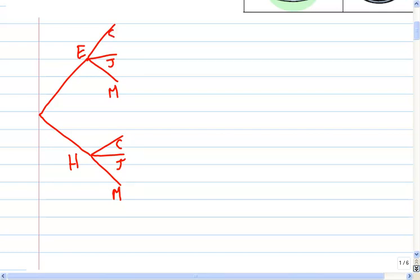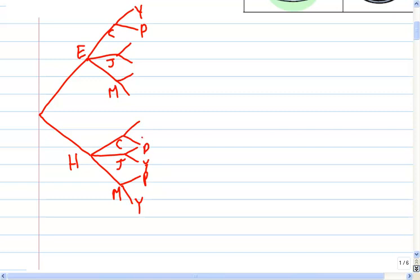Finally, I slide my tray to the very end and get to pick a dessert — nothing like yogurt for dessert. It's either yogurt or pie from each of these final decisions. So the dessert branches are: yogurt, pie, yogurt, pie, yogurt, pie, yogurt, pie. This tree diagram shows every possible meal that we could make.